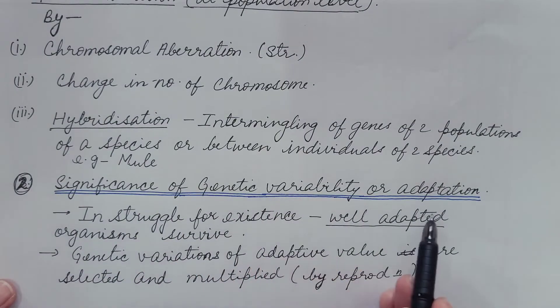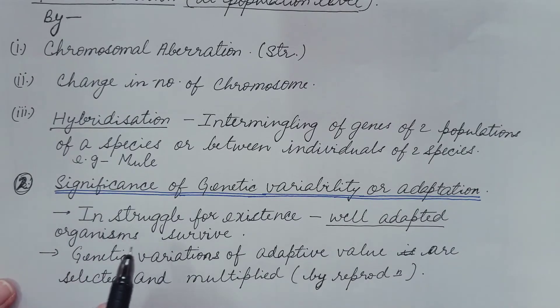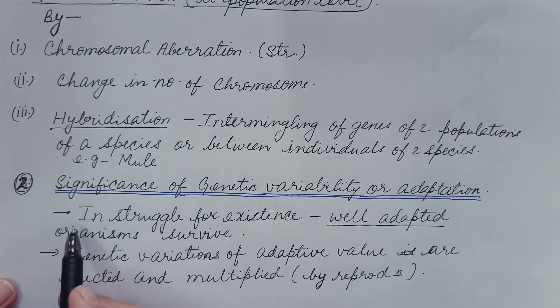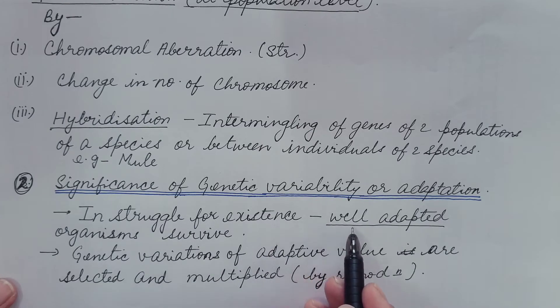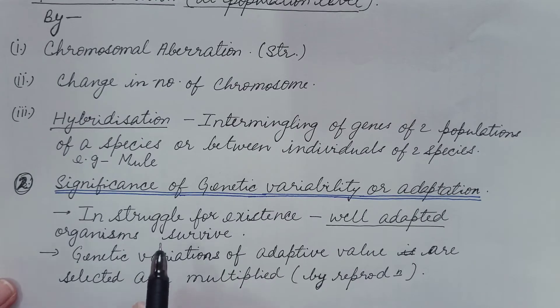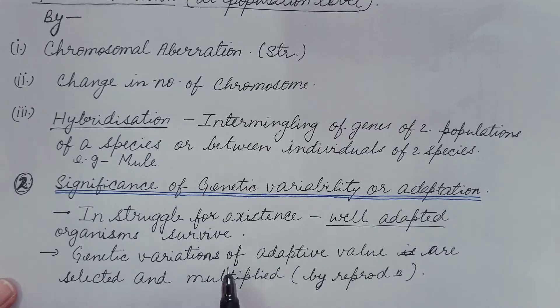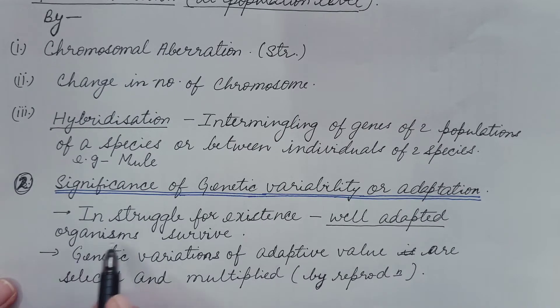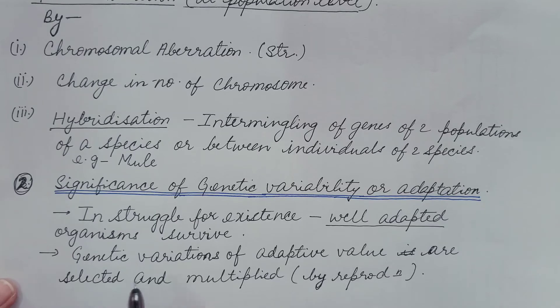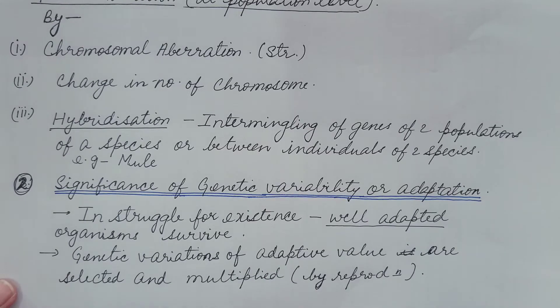Now what is the significance of genetic variability or adaptation? So we have already seen that population increases exponentially but other factors remain constant. So in order to survive there is the competition between individuals of a population. This is known as struggle for existence and in this only the well-adapted organisms survive. And how some of the individuals are well-adapted compared to the other? This is due to the genetic variation. Causes of genetic variations we have already discussed above. So these genetic variations which are of adaptive value or the individuals which have the genetic variation which help them to be well-adapted to the particular environment are selected.